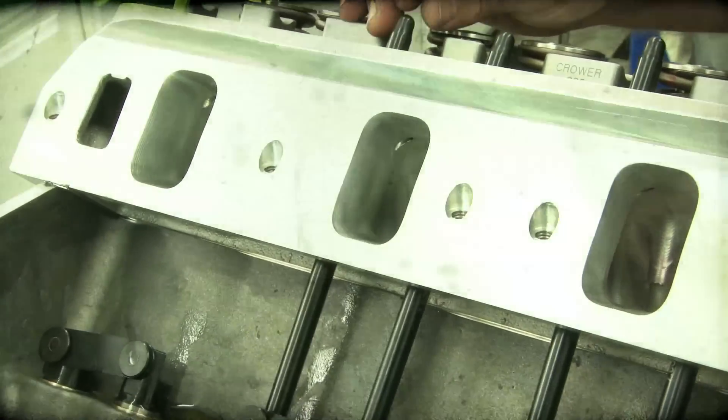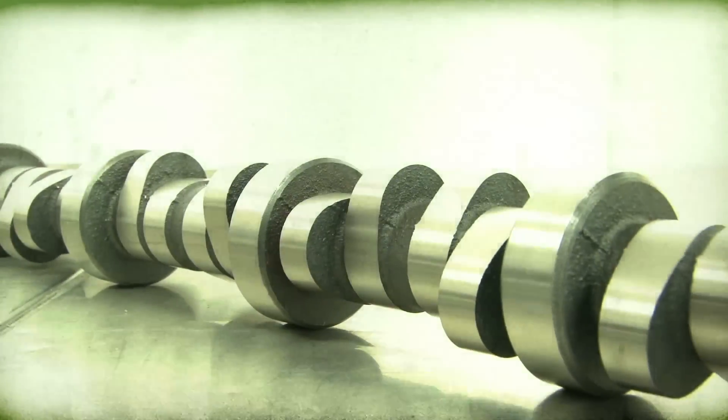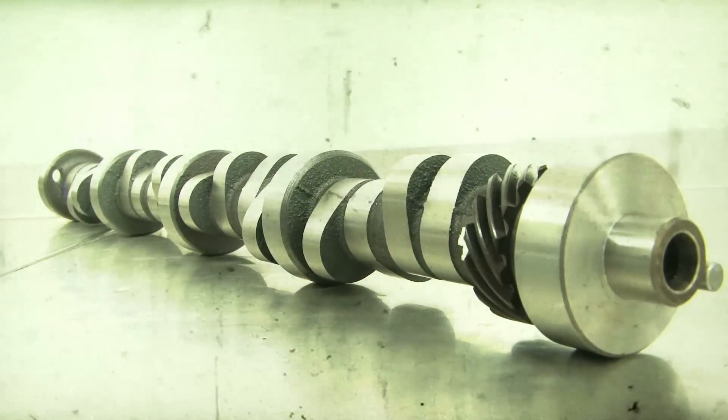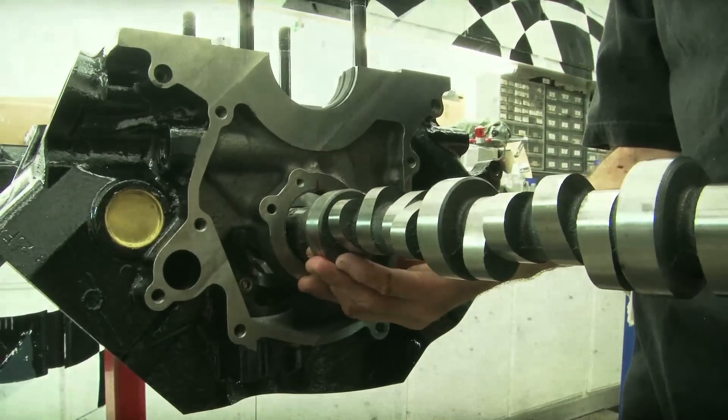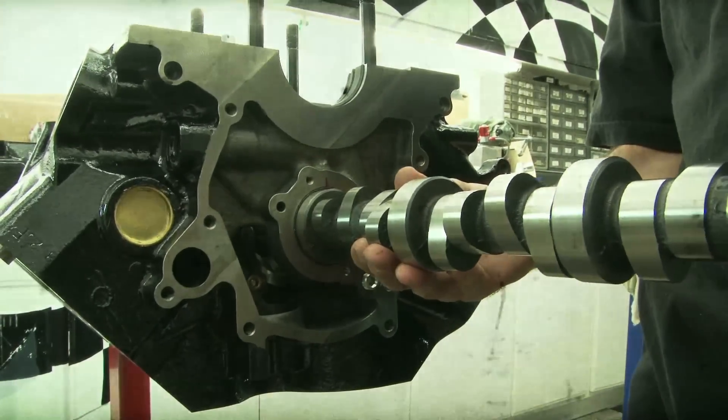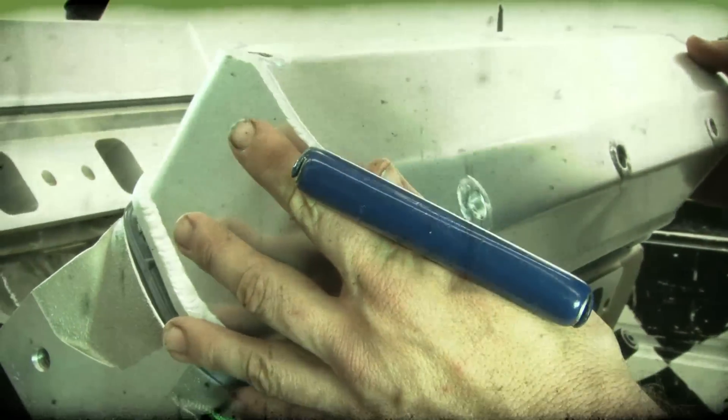The Crower custom ground hydraulic roller camshaft features a 260-266 duration at .050, .619 lift at intake and exhaust, and a 114-degree lobe separation. Capping off the heads are a set of Dart's trick-looking fabricated aluminum valve covers.